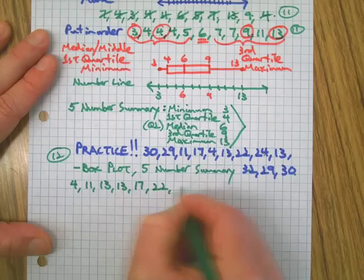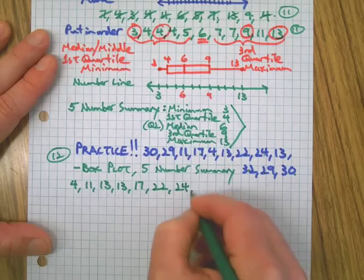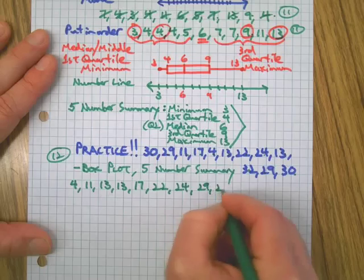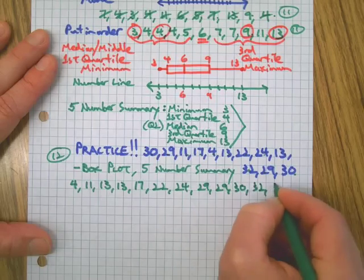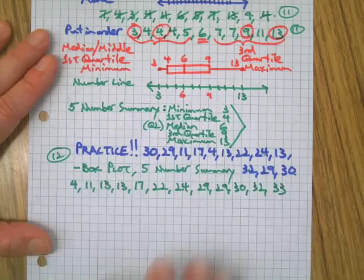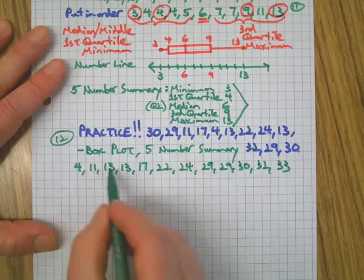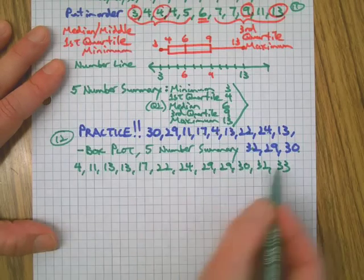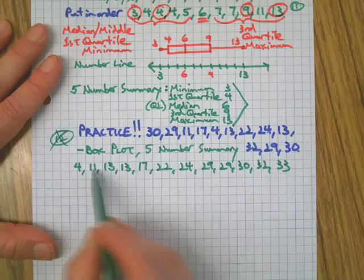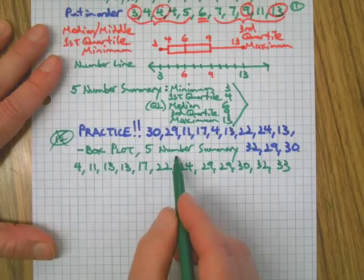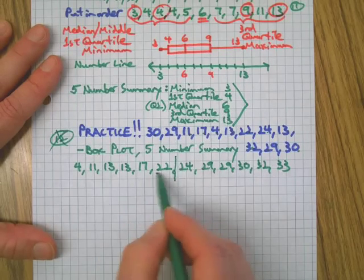Two 13s, a 17... Okay, here we go: 11, 13, 13, 17, 19, 22, 24, 27, 29, 30, 32, 33. 1, 2, 3, 4, 5, 6, 7, 8, 9, 10, 11, 12. We still have 12, we're good.